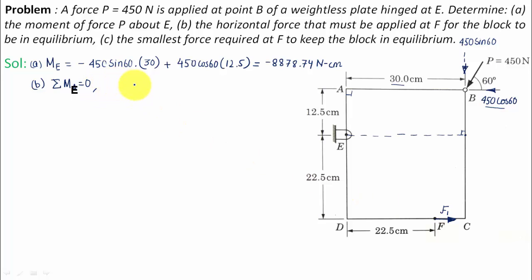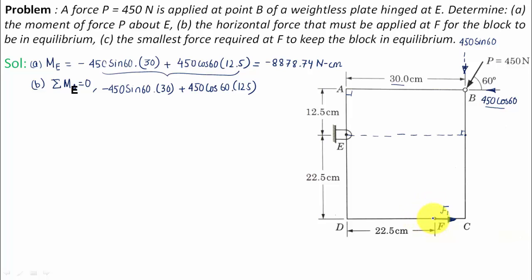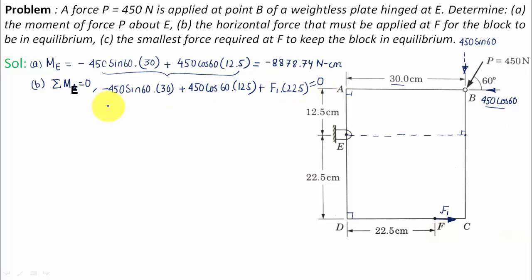Writing out the moment equation: minus 450 sin 60 multiplied by 30 — as for F1, its line of action has a perpendicular distance from E of ED, which is 22.5 centimeters. Keeping your thumb at E and moving your baby finger in F1's direction, you'll realize F1 produces an anticlockwise moment, so we put a positive sign: plus F1 multiplied by 22.5, all equal to zero.